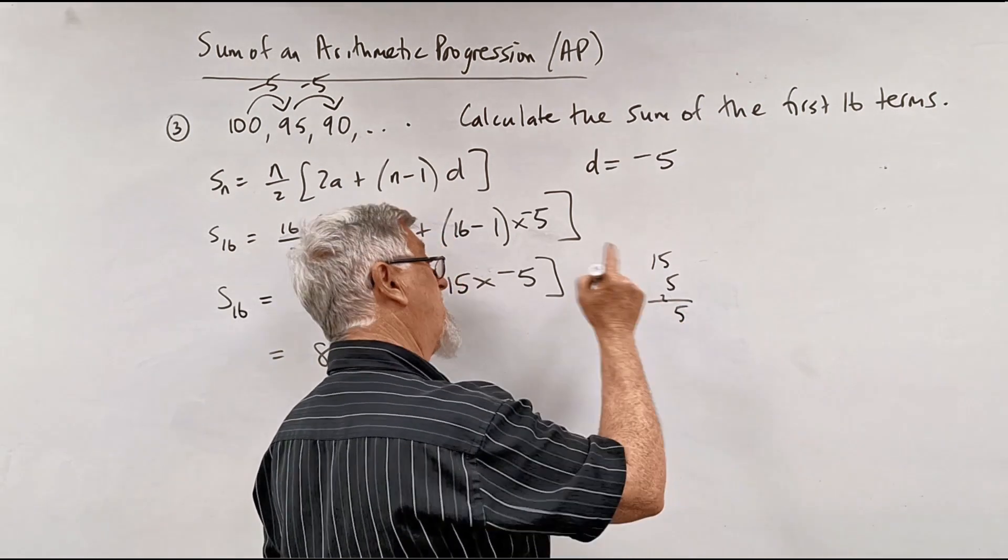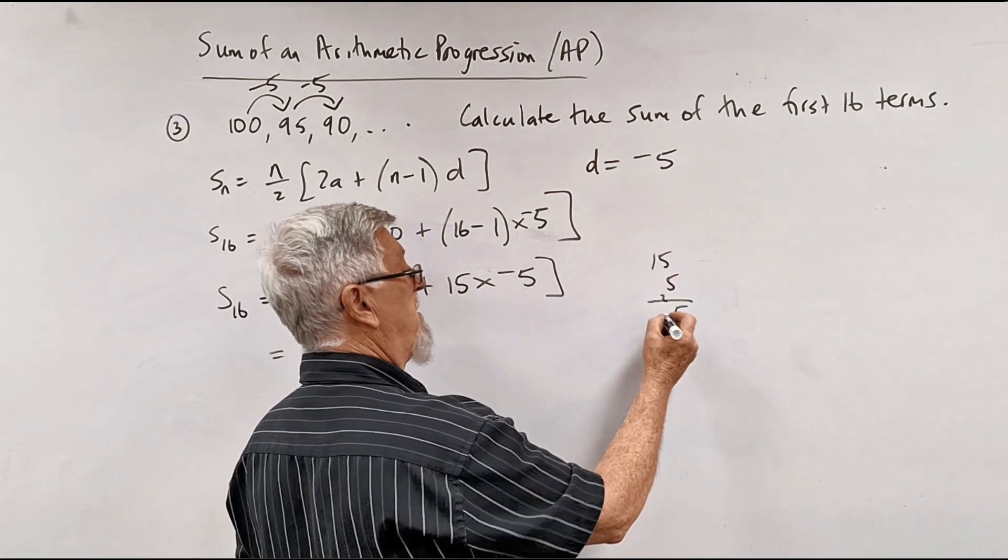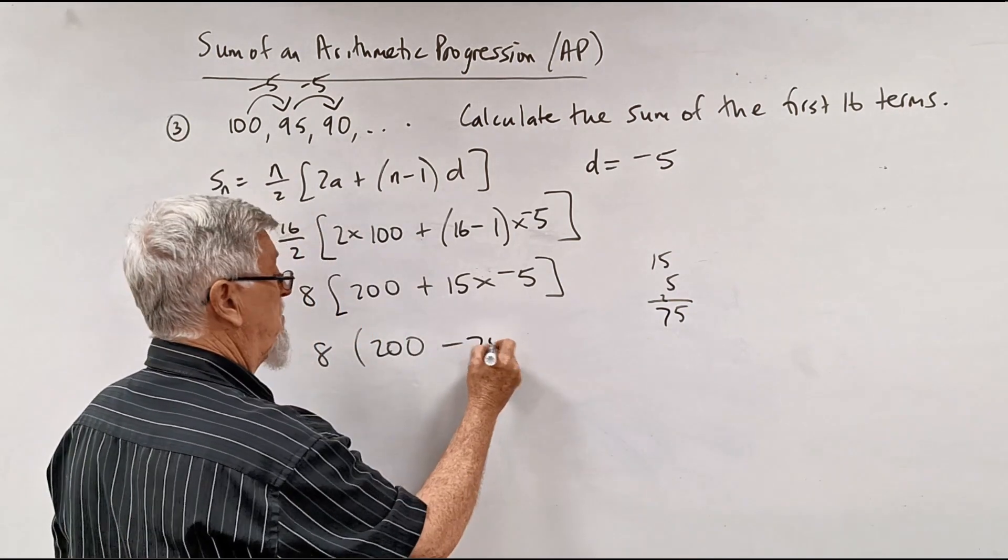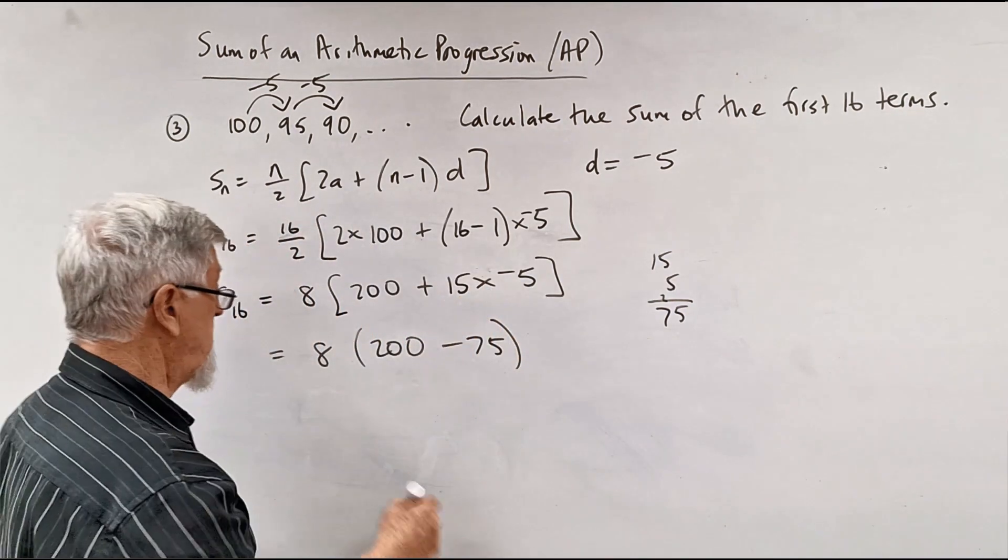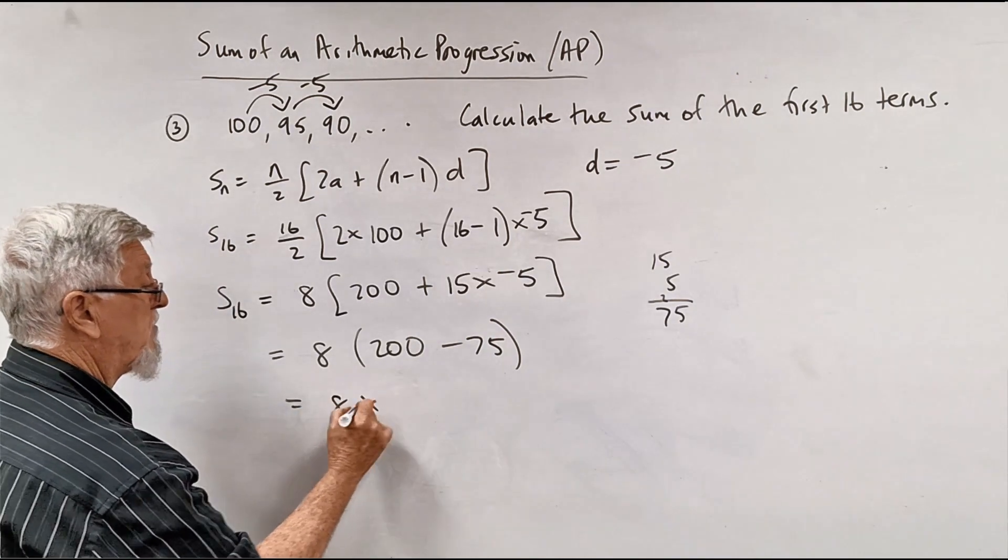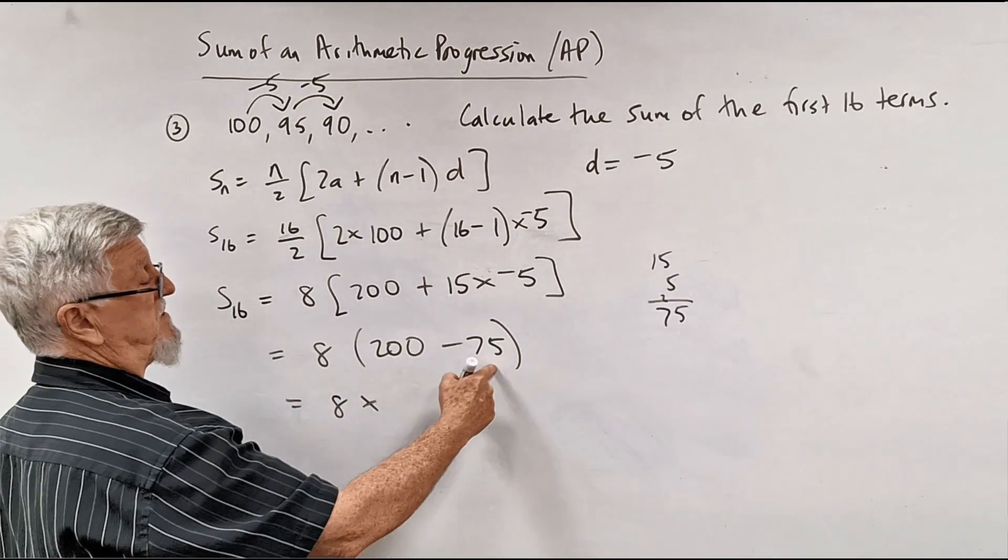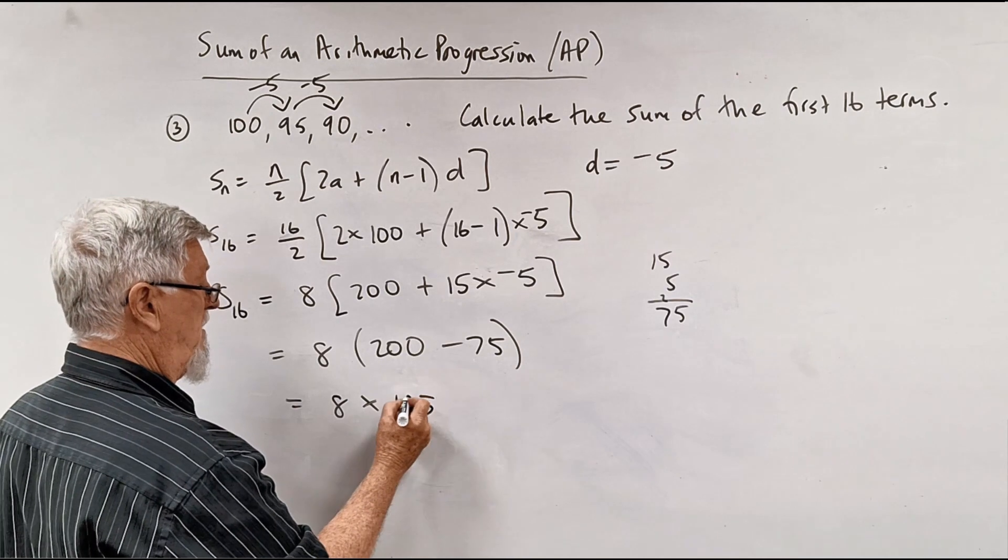5 times 5 is 25, put down the 5, carry the 2. 5 times 1 is 5, plus 2 is 75. That's not bad. So what happens otherwise, you see people do all sorts of crazy stuff. So this is 8 multiplied by 200, 75, and 125.